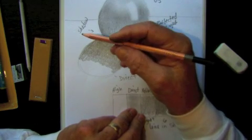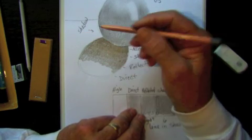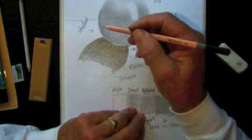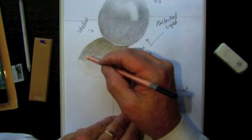They'll use a dark value like a 5 or a 6B, and then they'll go with a 3B, and then they'll go with a 2B.